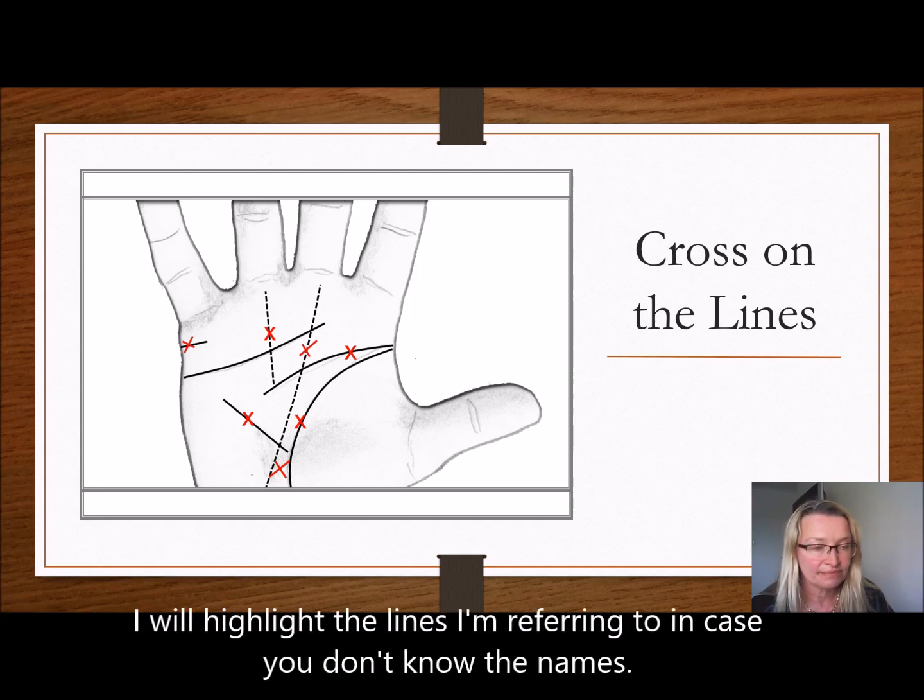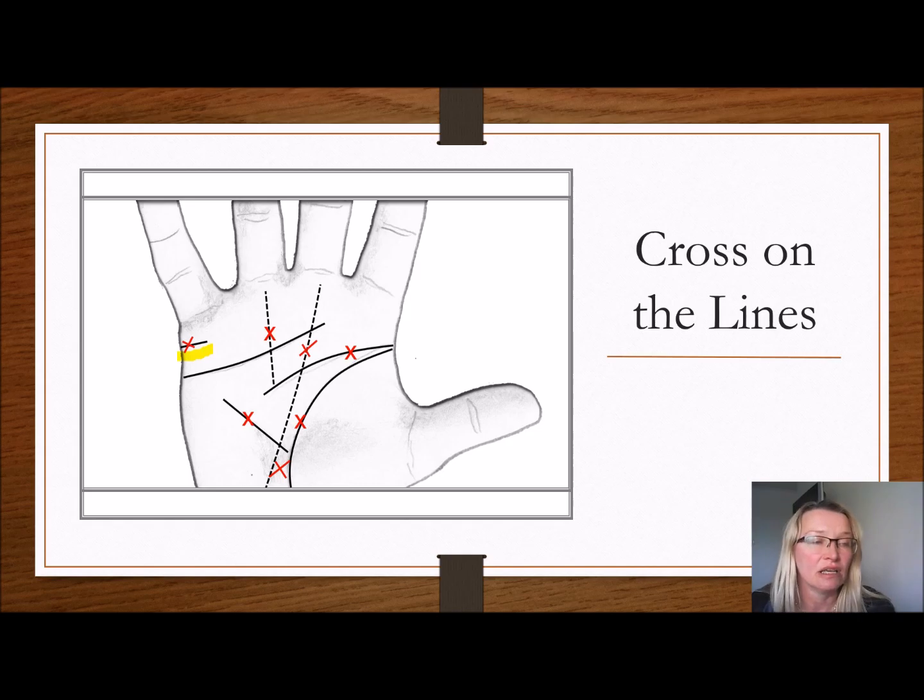Now, marriage line. A cross on the marriage line depicts a problem in the marriage. So it may be that the couple, if they are married, are having issues. Or if the person is not married, it might depict that the person is struggling to find a partner.